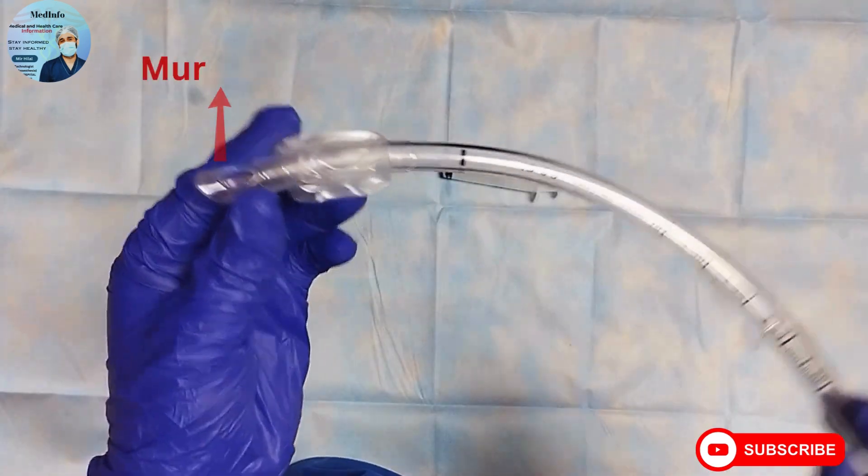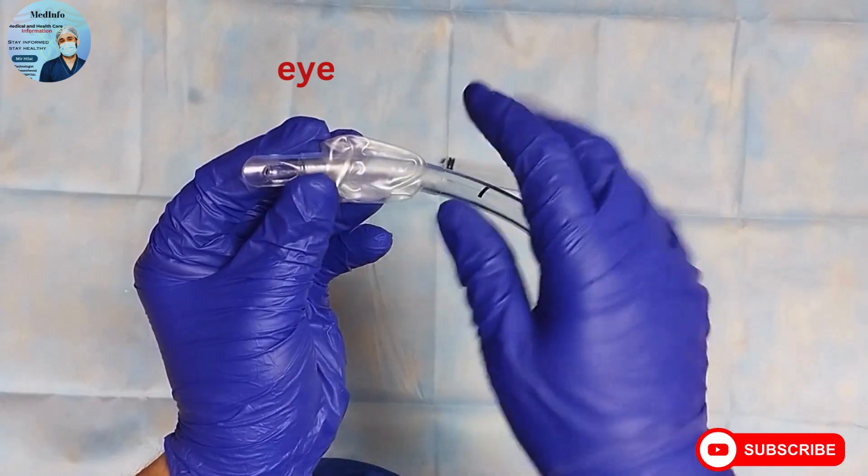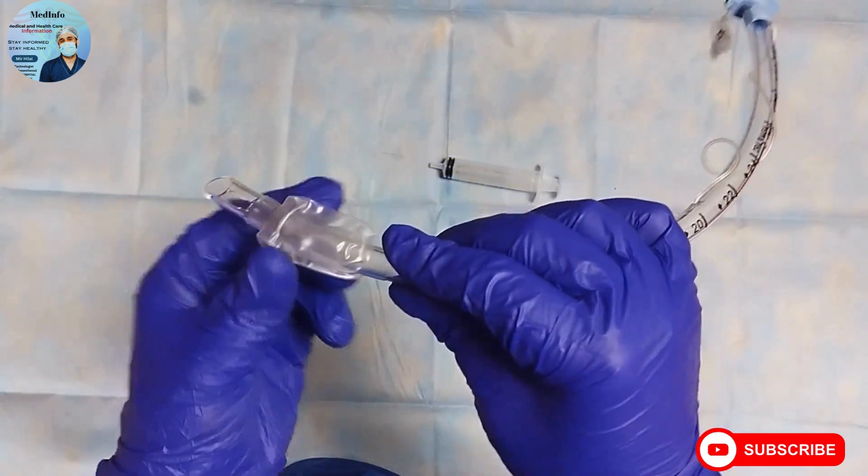PVC type endotracheal tubes contain an additional hole near the tip called the Murphy eye. So if the main lumen gets blocked, the patient can still be ventilated through this Murphy eye.